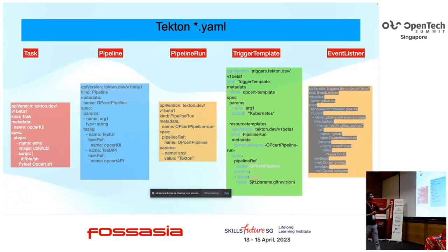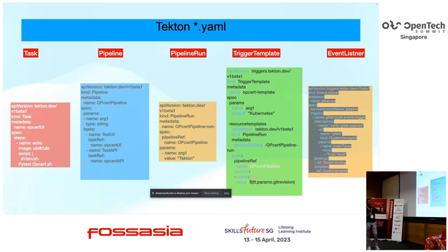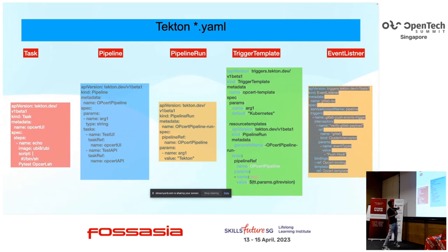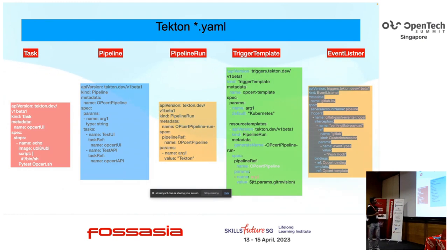Tekton tasks and pipelines are just YAML. You write your YAML defining what steps to execute and the images on which your task runs. Each task runs as a pod, and each pod executes as a single instance for the process. It's easy to understand for QE engineers and easily maintainable — any changes on the test side reflect on the image, so you just update your image.